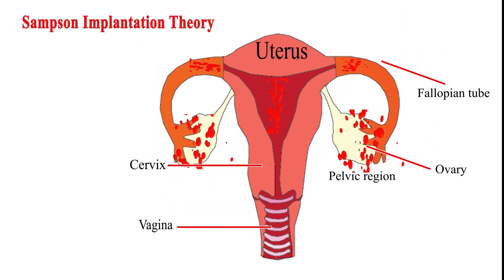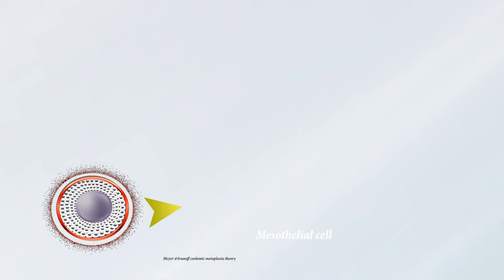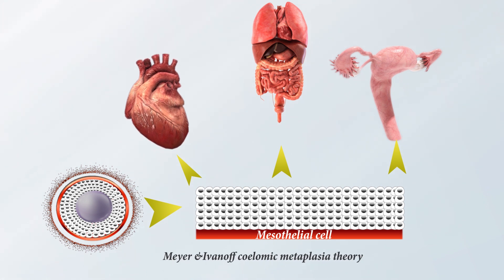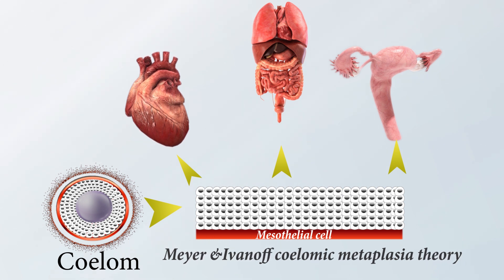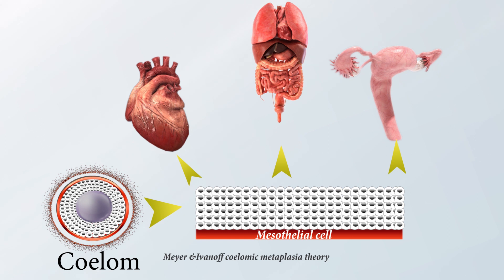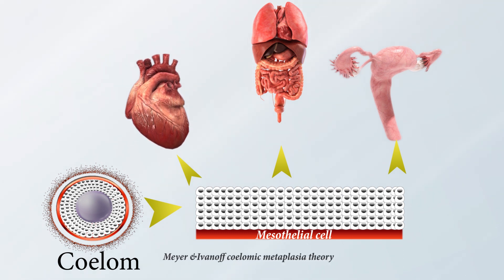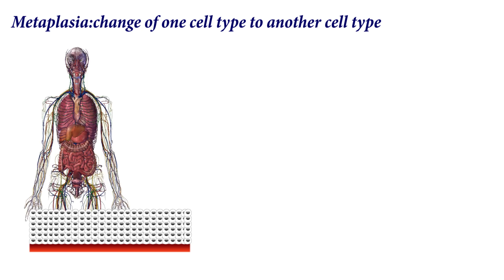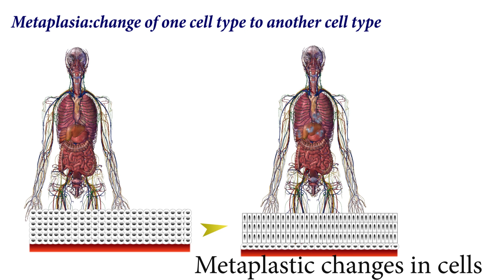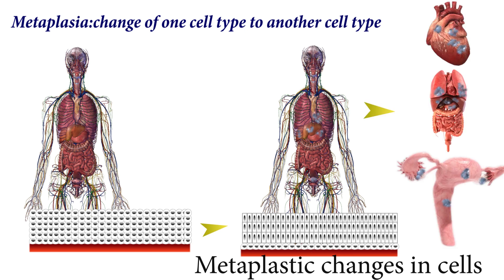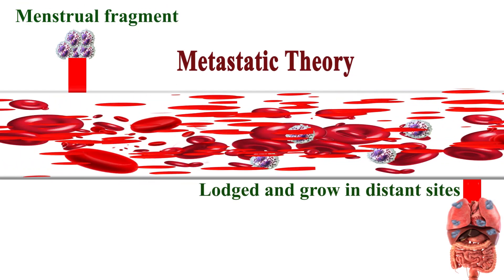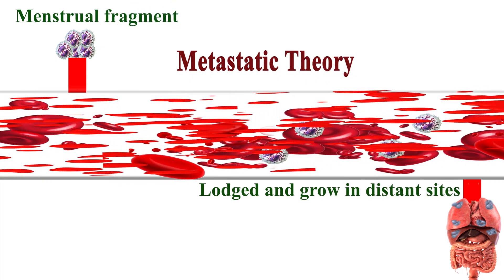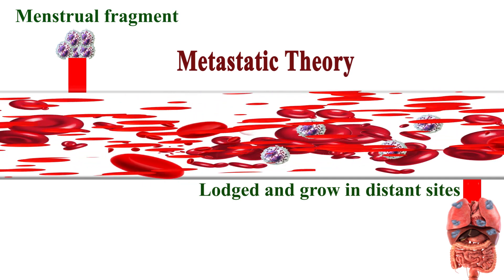This back-passage causes implantation and growth anywhere in the pelvic region and beyond. Celomic metaplasia theory: the embryological structure celom is the body cavity lined by mesothelial cells. From these celomic mesothelial cells, the body wall, heart, liver, lungs, and female genitalia are all developed. Late in life, metaplastic changes in these mesothelial cells result in endometriosis at these sites. Metastatic theory: menstrual fragments get embolized and travel through blood and lymphatic channels, causing implantation and growth in distant sites.